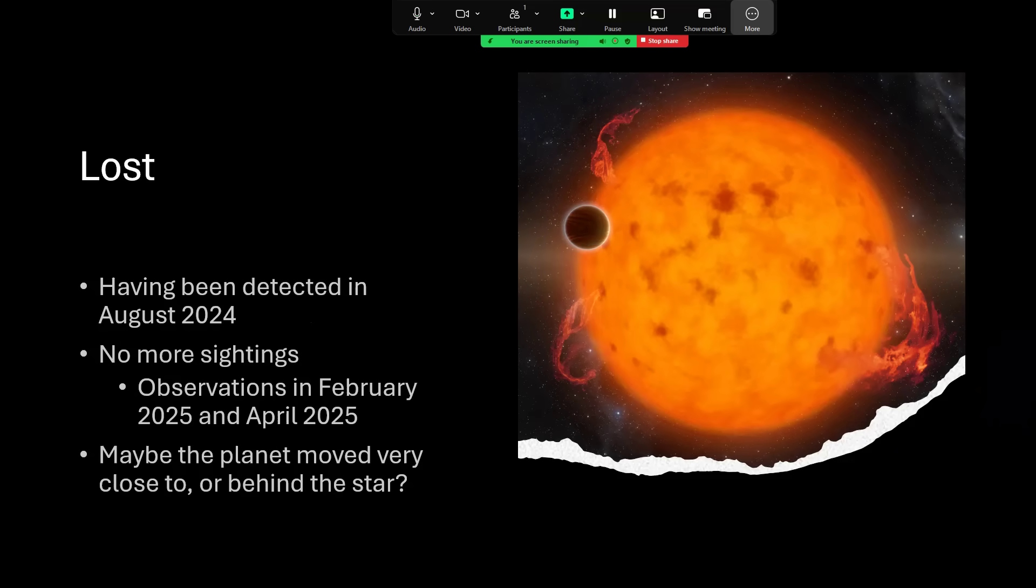But we seem to have lost it again. Having been detected last year in 2024, no new sightings have been obtained. The telescope was able to use a little bit of discretionary time to follow up the observations in February of this year, 2025, and again in April. And in both cases, no detection was made in the data. So, maybe the planet is orbiting around the star and has moved out from the position far enough away from the star for us to detect and is perhaps either in the line of sight or behind the star or so close to it that we're not able to determine its position.